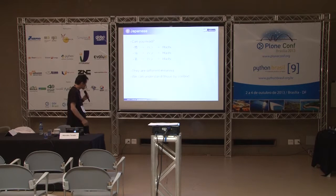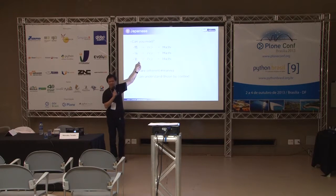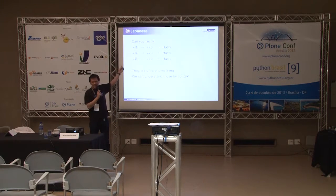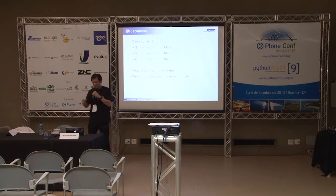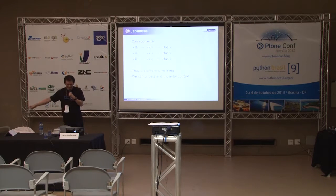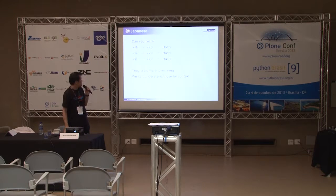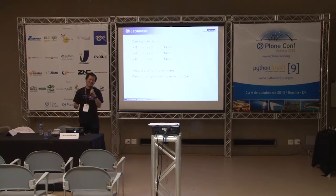Can you read these? Hashi, hashi, hashi — different characters, same reading, same phonetic. But there are different meanings. The first hashi is a bridge, the second is an edge, and the last one is chopsticks. We can understand those by context.